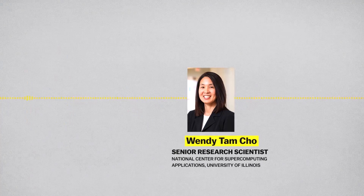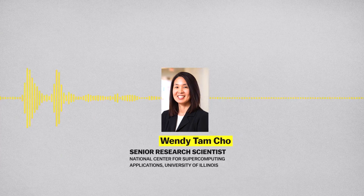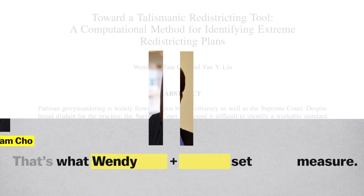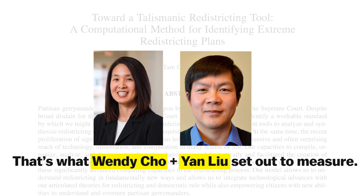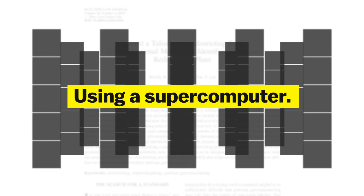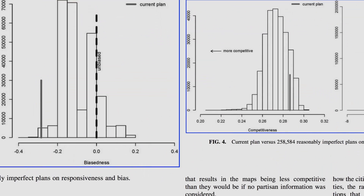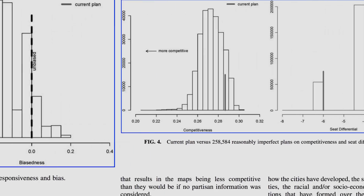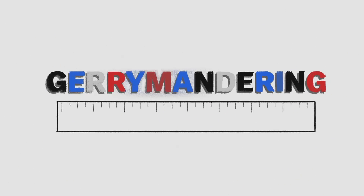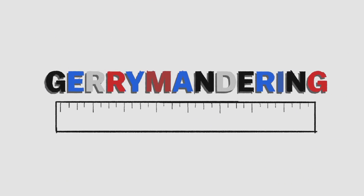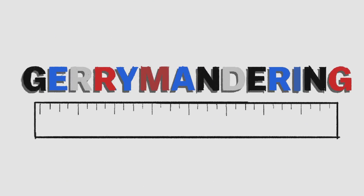The Supreme Court has yet to settle on a standard or definition of political fairness. They simply don't want to declare a partisan gerrymander without some way to measure them. That's what Cho's research team is trying to fix with a supercomputer — they're making a gerrymandering ruler.